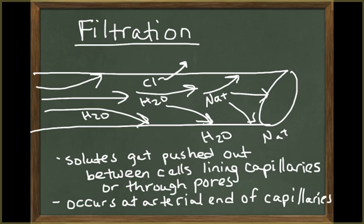The solute molecules that leave the bloodstream are small enough to pass between adjacent endothelial cells of the capillaries or between the pores in the fenestrated capillaries. Filtration takes place at the arterial end of the capillary, where the pressure is greater than at the venous end of the capillary.